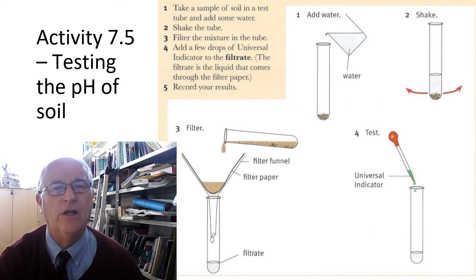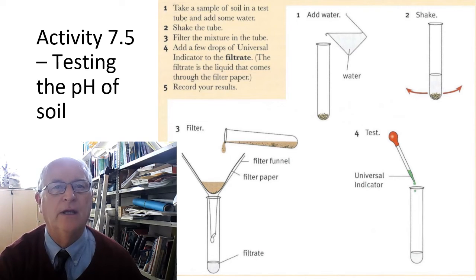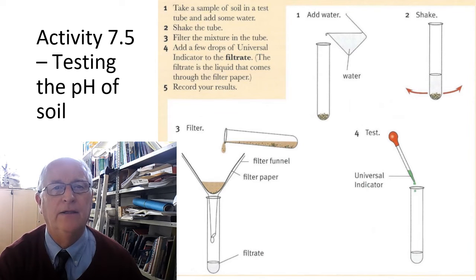You'll observe a colour, and using a colour chart you can find out what the pH value is and determine whether it was an acid or an alkali, and how acidic or how alkaline it was.